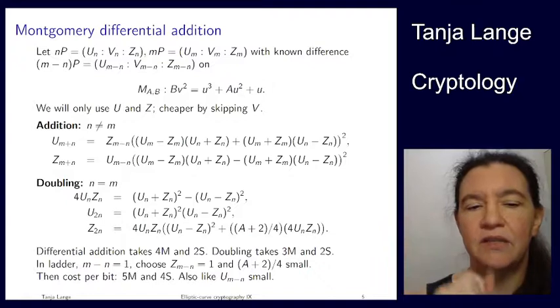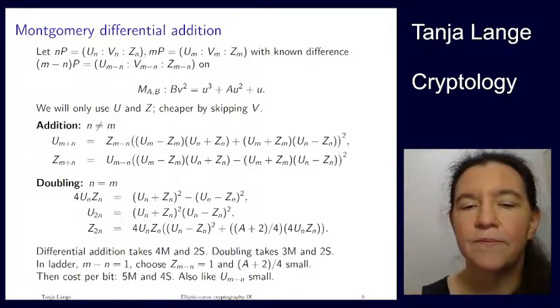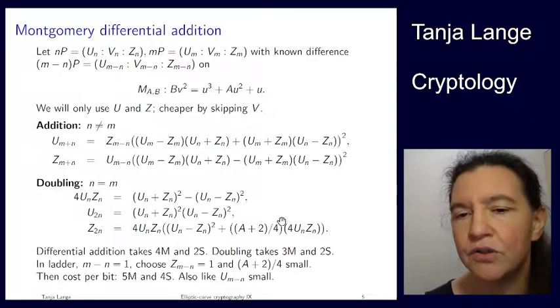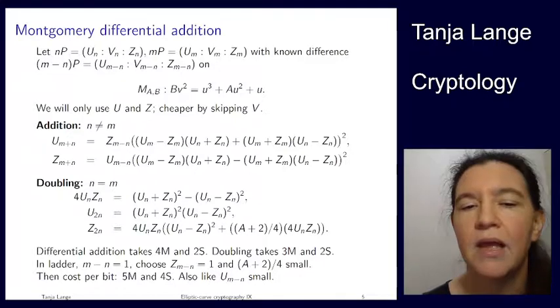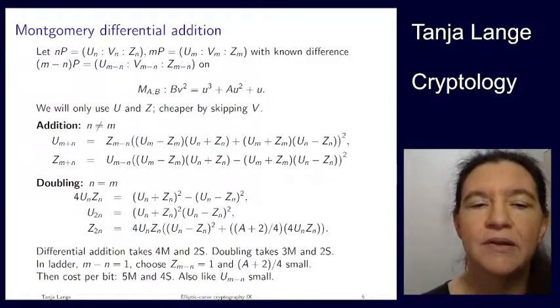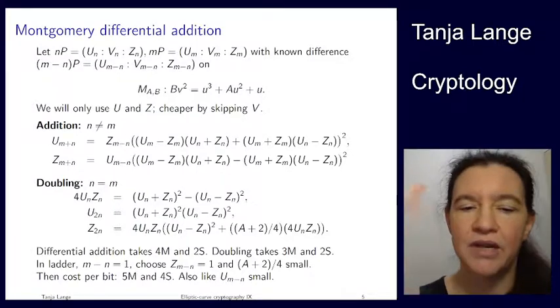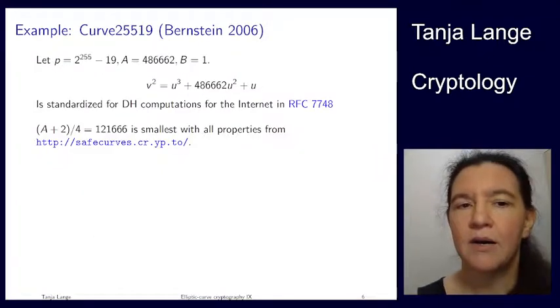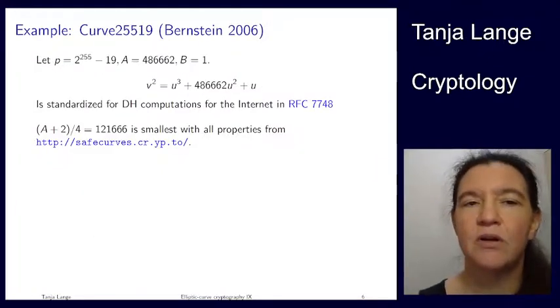Now in the ladder, where we have that we're looking at fixed difference m minus n being one, then we would like to choose the input point to be affine, so that the z coordinate is one. And also, like I said for the Edwards curves, we like to choose our coefficients so that the multiplications by constants are very cheap. So we're choosing this to be small, the z n to be one. And so we don't have to pay for this multiplication. So then it goes down to five multiplications and four squarings. And we might also want to choose our base point to be small. Here's actually a famous example of a Montgomery curve, namely curve 25519, which was proposed by Bernstein in 2006 and is now actually a standard for the internet.